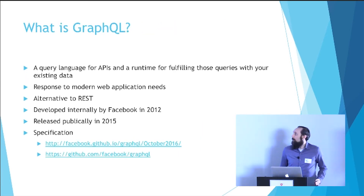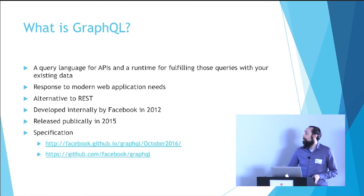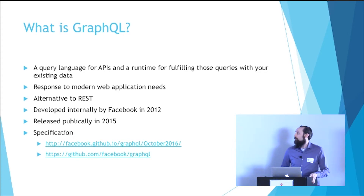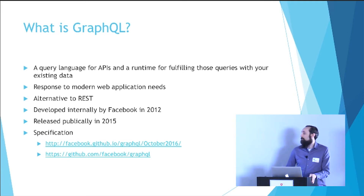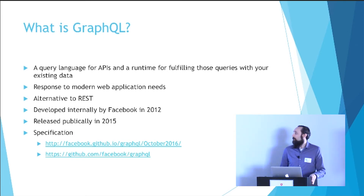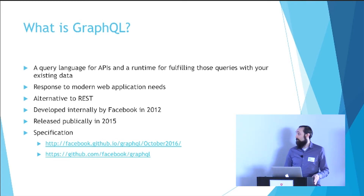So what is GraphQL? It is a query language for APIs and a runtime for fulfilling those queries with your existing data. It is a response to modern web application needs. Some people describe it as a replacement for REST, but I would describe it more as an alternative to REST. It was developed internally by Facebook in 2012 and then released publicly in 2015. And unlike REST, it has an actual specification — since it's not just a philosophy, there is an actual spec to go along with it.